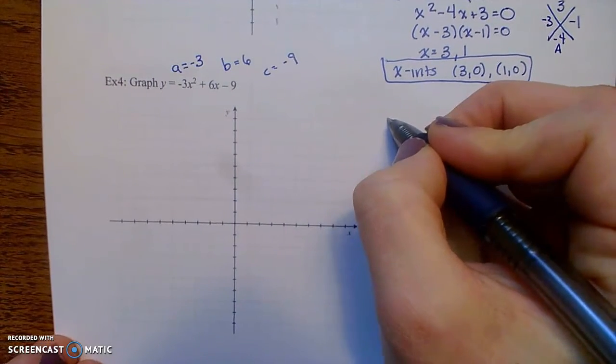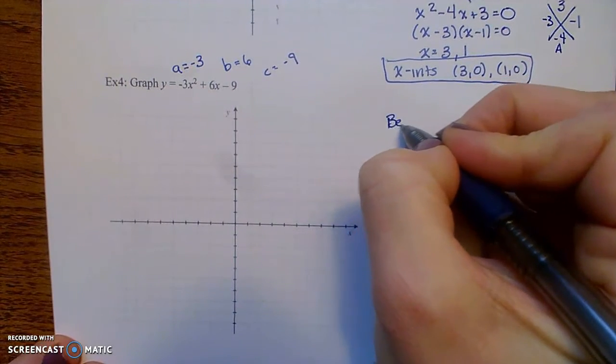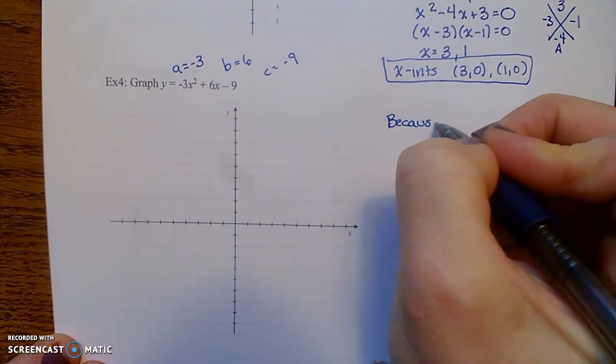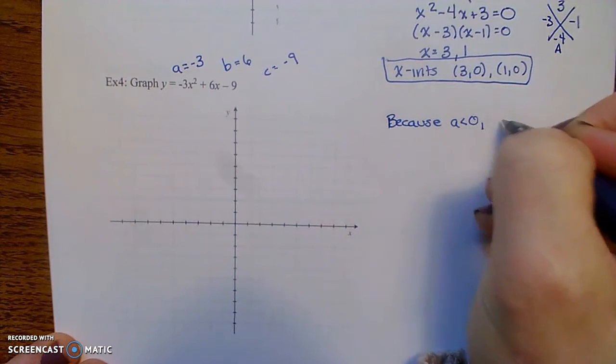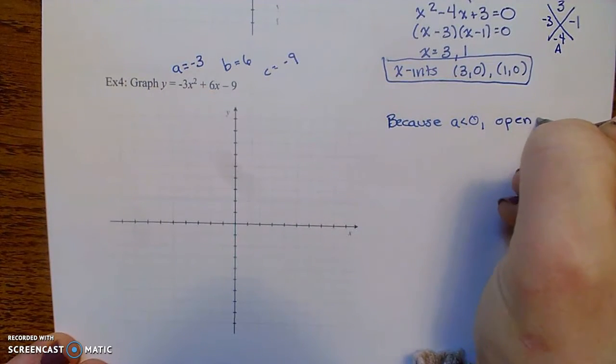So first thing to notice is because a is negative, this parabola will open down.